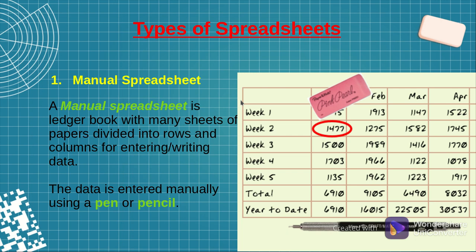There are two main types of spreadsheets: namely the manual spreadsheet and the electronic spreadsheet. A manual spreadsheet is a ledger book with many sheets of paper, again divided into rows and columns, where somebody can write numerical data using a pen or a pencil.